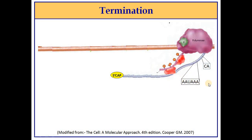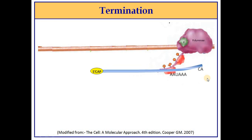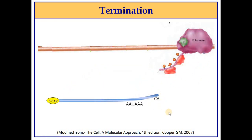For mRNA termination, there is a highly conserved region called the AATAAA sequence present in almost every mRNA, followed by a CA region where endonucleases cut the RNA molecule. After cleavage, proteins such as poly A polymerase (PAP) add a poly-A tail — a process called polyadenylation. The result is a 5-prime-capped and poly-A-tailed mRNA that is the primary transcript, which will undergo further processing to become a mature mRNA capable of translation.